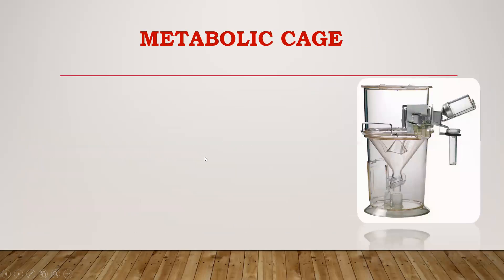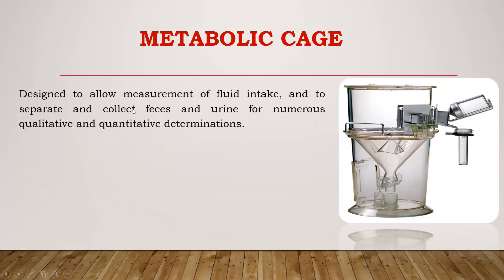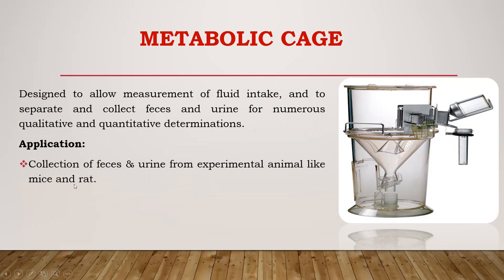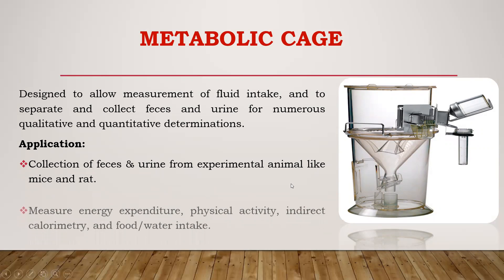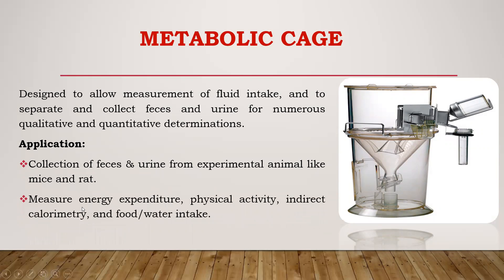The metabolic cage is designed to measure fluid intake — that is, water intake — and feed intake, and allows collection of urine. It is used when quantitative and qualitative parameters of metabolic changes are required. Collection of feces and urine from experimental animals like mice and rats can be done using the metabolic cage. Indirectly, it helps to measure energy expenditure, physical activity, and food and water intake capacity of the animal.